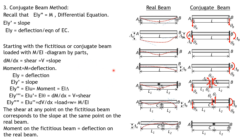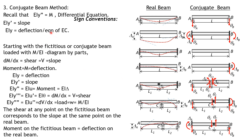To summarize: the shear at a point on the conjugate beam corresponds to the rotation at the same point on the real beam, and the moment at a point on the conjugate beam corresponds to the deflection at the same point on the real beam. Remember the sign conventions for shear and moment, as these are very important to ensure the final values have the correct signs.